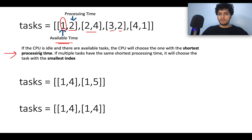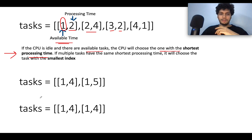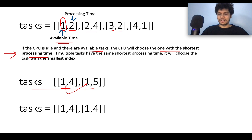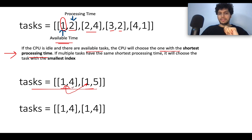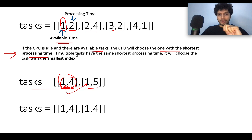There is an important property: if the CPU is idle and tasks are available, it chooses the one with the smallest processing time. For example, if the CPU has a choice between two tasks both available at the first instant, it picks the one with the lower processing time — that one gets executed first.